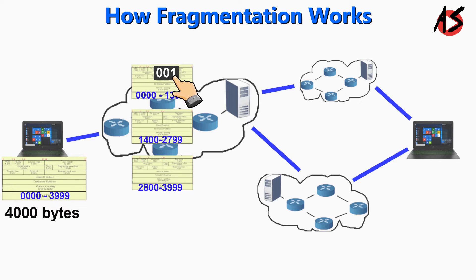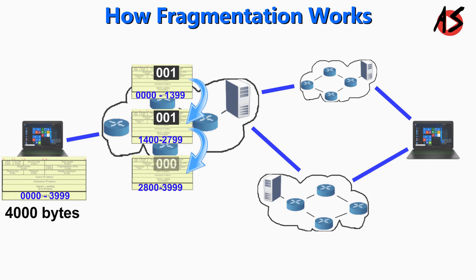The third bit is called the more-fragment bit. For the first fragment, this bit is set to 1 because there are more fragments available. For the second fragment also, this bit is set to 1 because another fragment follows. But for the third fragment, this bit is set to 0 since this is the end of all fragments from the original datagram.